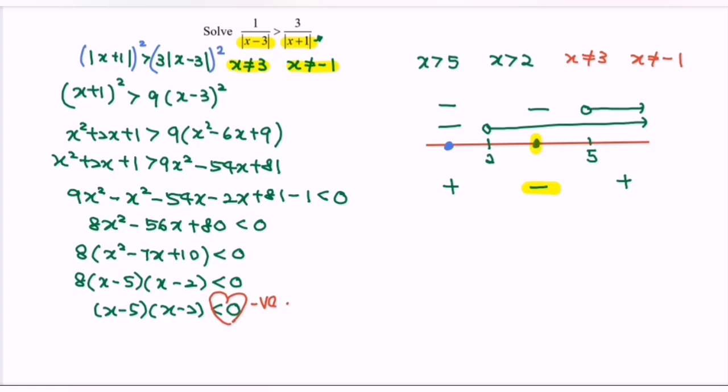So the answer would be, start from 2, where 2 is not included, until 3. Union, start from 3 until 5. So take note, 2, 3, and 5 are not included for this interval.